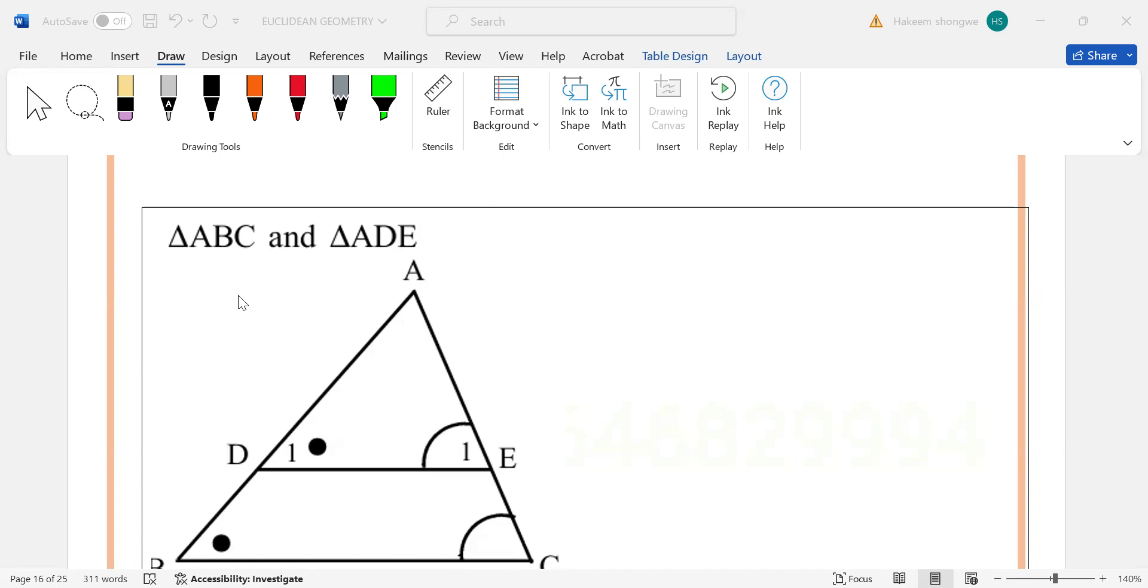If you check between triangle ABC and triangle ADE, you have A, you have A. You also have... then if you check the figure here, you only have one, so meaning that angle A is common to both triangles because you only have one.